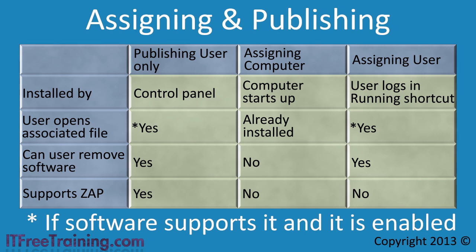Publishing software is only available to the user. You cannot publish an application to a computer or group of computers. Publishing software does not install the software on the computer but gives the user a choice to install it. To install the software, the user needs to install it via the control panel. Publishing is a good option if you have a large number of software titles that you want a user to have access to when they need to. Since publishing is hidden away in the control panel, this does not clutter up the user's start menu with software they will never use.